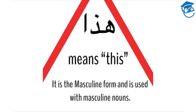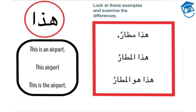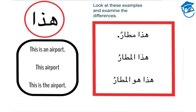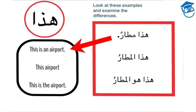Hadha means 'this' in the Arabic language. It is the masculine form and it's used with masculine nouns. Look at these examples and examine the differences between them. Hadha Mataron means 'this is an airport.' It's a full sentence — you have Hadha plus an indefinite noun. The indefinite noun will always take nunation, or tanween, at the end.